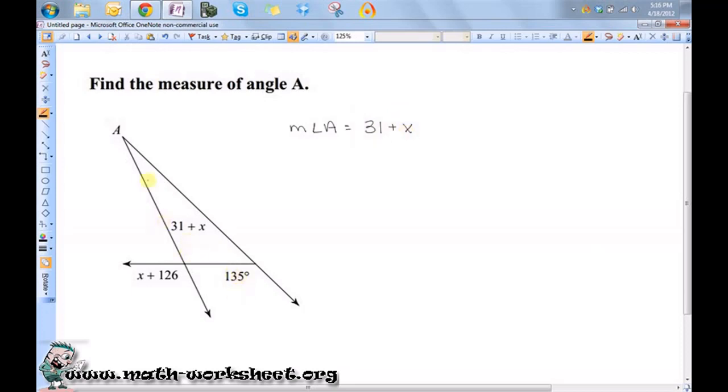Now, I know if I add all of the angles within this triangle, I should get 180 degrees. So, to be able to find this, let's first find these other two angles here.